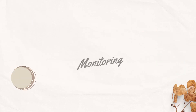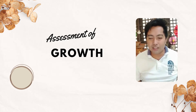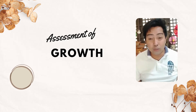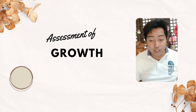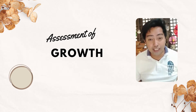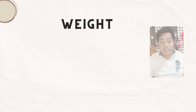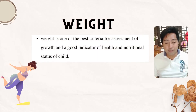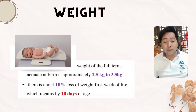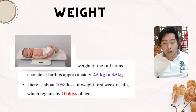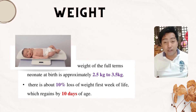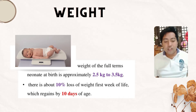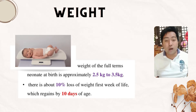Growth and Development — Assessment of Growth. Assessment of physical growth can be done by anthropometric measurement and the study of velocity of physical growth. Measurement of different growth parameters is an important nursing responsibility in child care. Weight is one of the best criteria for assessment of growth and a good indicator of health and nutritional status of a child. Weight of the full term newborn sees about 10% loss in the first week of life, which regains by 10 days of age.